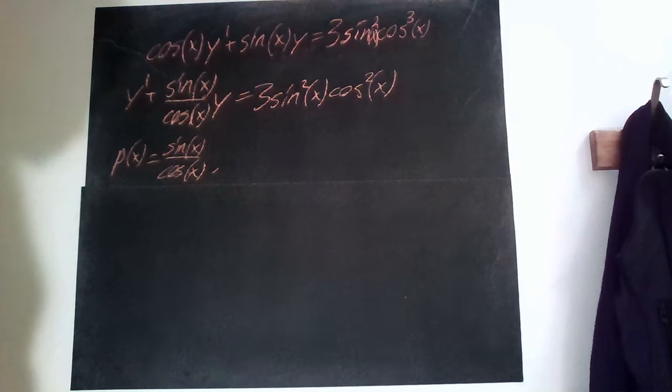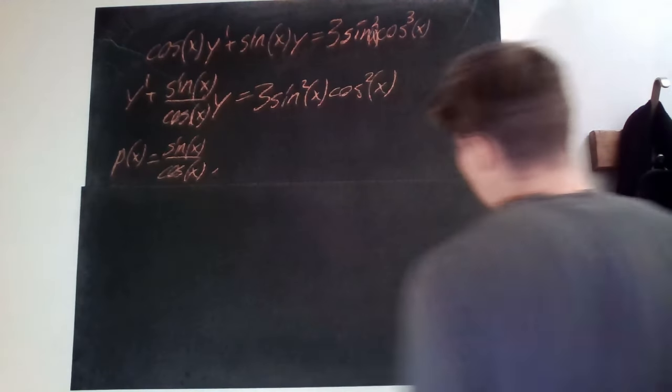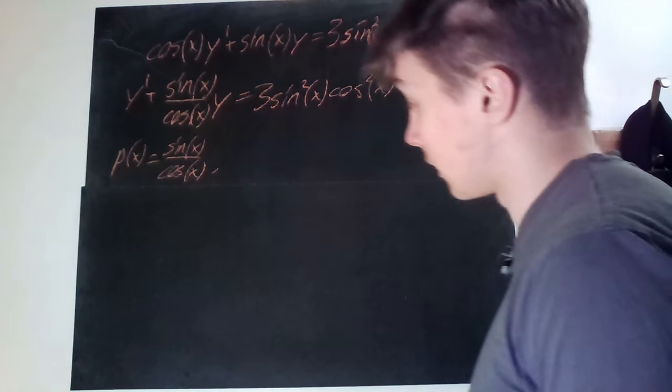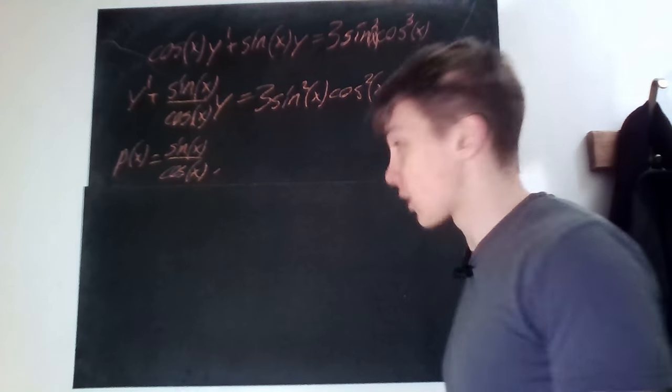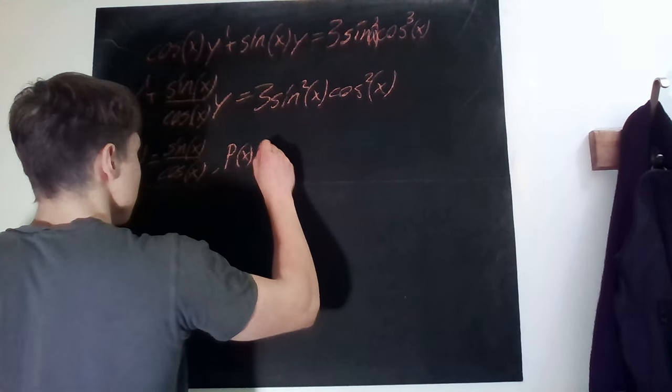What is the primitive function of sine over cosine of x? Well that is just taking the integral. If you were to do a variable substitution with say u equals cosine, then you would very quickly see that a primitive function of p